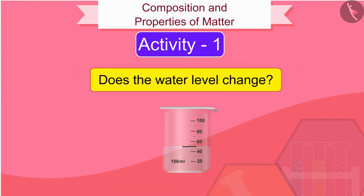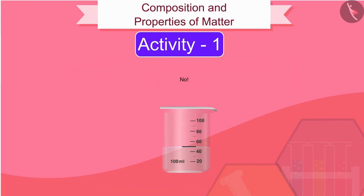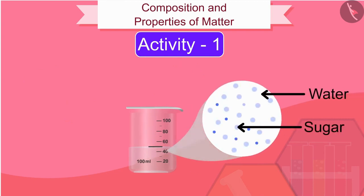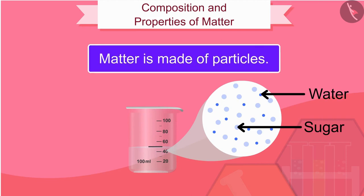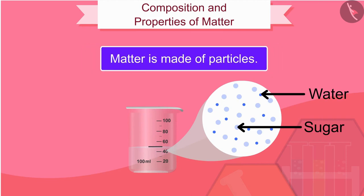Does the water level change? No. How did this happen? What happened to the sugar dissolved in the water? When we dissolve sugar in water, the particles of sugar get into the spaces between the particles of water. From this activity, we can conclude that matter is made of particles.